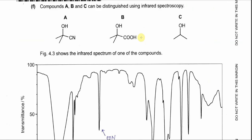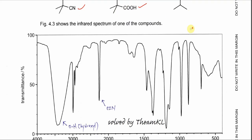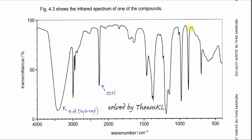Part F: compounds A, B, and C can be distinguished using infrared spectroscopy. Compound A has two functional groups (OH and CN), compound B has two functional groups (OH and COOH), and compound C has only the alcohol group. Looking at the IR spectrum in figure 4.3: